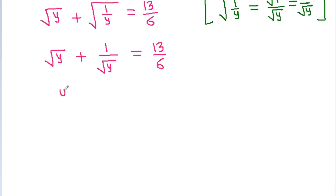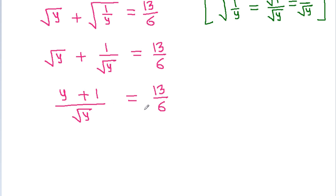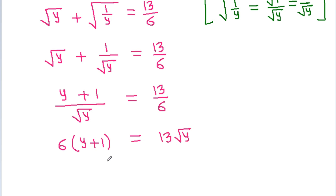So y plus 1 over square root of y is equal to 13 by 6. If we cross-multiply by the square root of y, then 6 times (y plus 1) will be equal to 13 times the square root of y. So 6y plus 6 is equal to 13 times the square root of y.